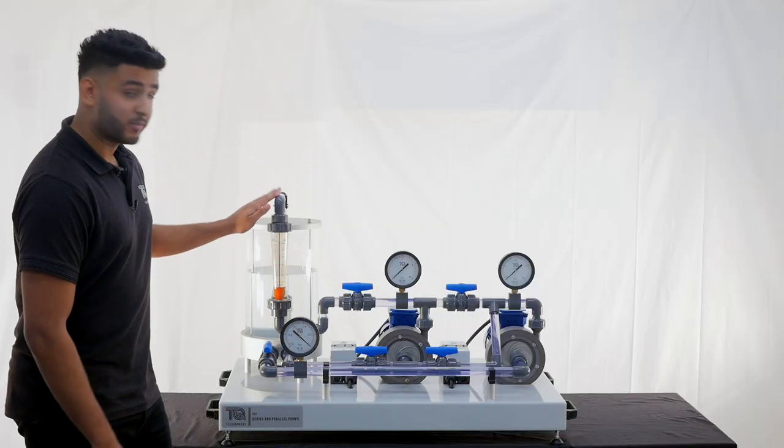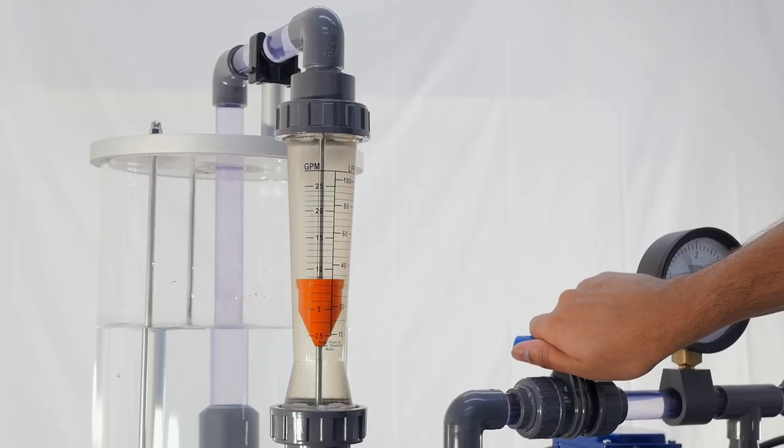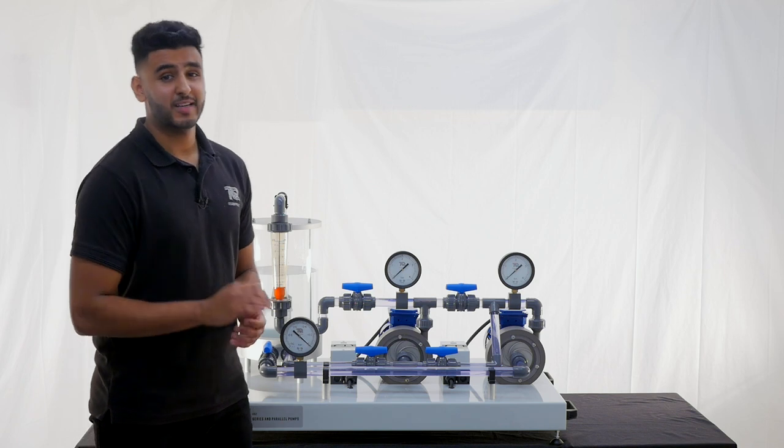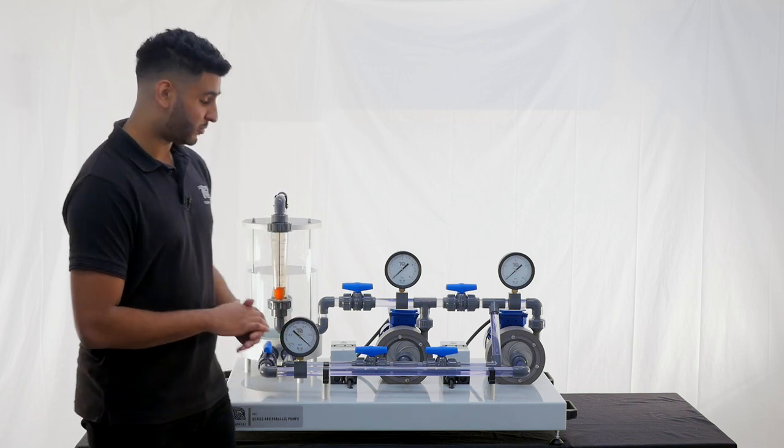The flow rate is measured using a rotometer, which is located just before the water reservoir. Water then returns to this reservoir for reuse, keeping water consumption to a minimum and allowing the equipment to be used away from a water source.